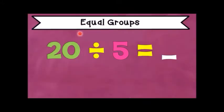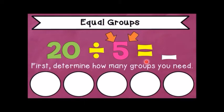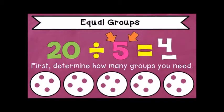Let's model equal groups to solve 20 divided by 5. First, we determine the number of groups needed — the divisor tells how many groups are needed. Draw 5 circles to show the 5 groups. The dividend, which is 20, is the number of counters shared evenly among the 5 groups. Each group has 4 counters: 1, 2, 3, 4. So the quotient is 4. 20 divided by 5 is equal to 4.